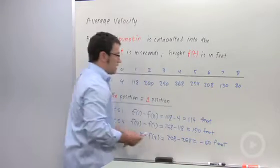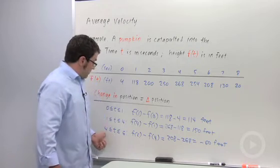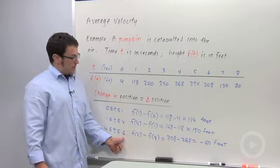And what does that mean? That means that over this interval from t equals 4 to t equals 6, the pumpkin has dropped 60 feet.